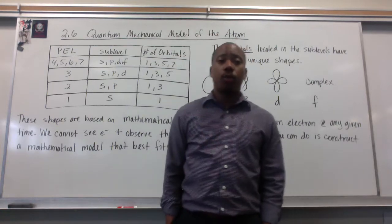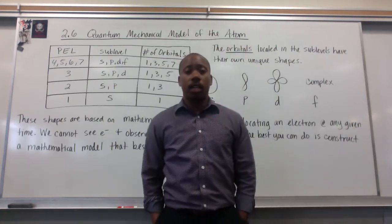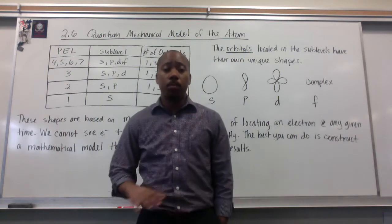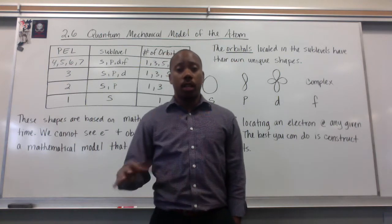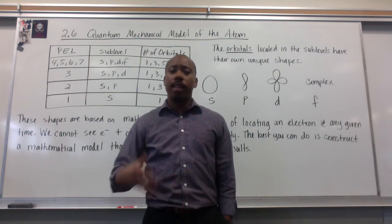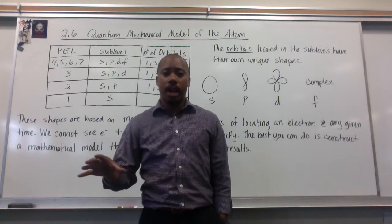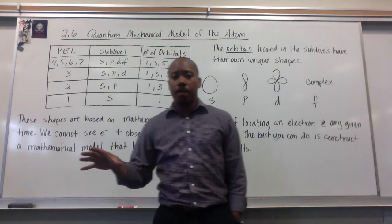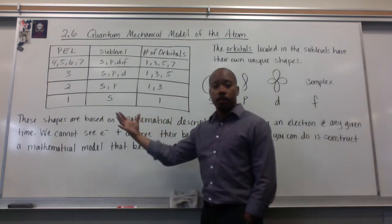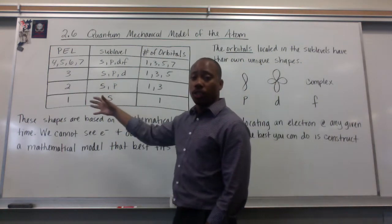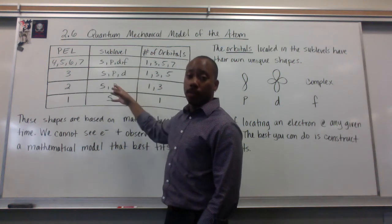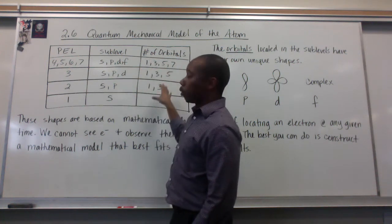Hello, gentlemen. Welcome to section 2.6 in our video on the quantum mechanical model of the atom. In class, we modeled the quantum mechanical model of the atom after a movie theater. In that movie theater, we summarized that we have seven different energy levels in our atom. Each energy level consists of sub-levels of energy, and those sub-levels of energy have different orbitals.